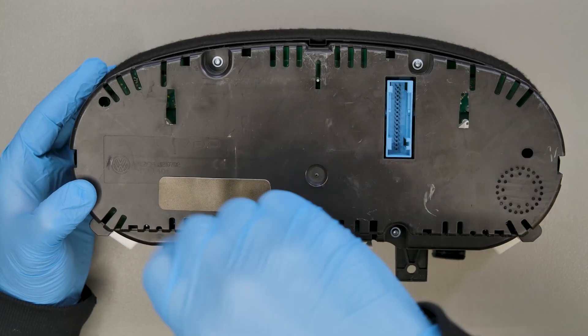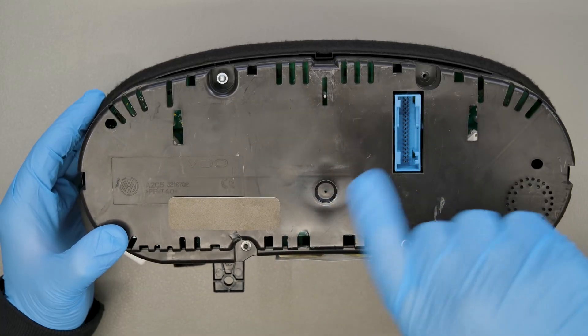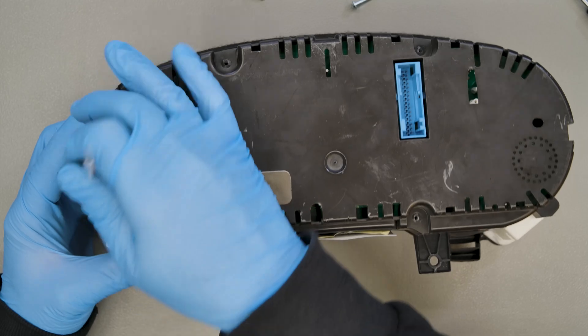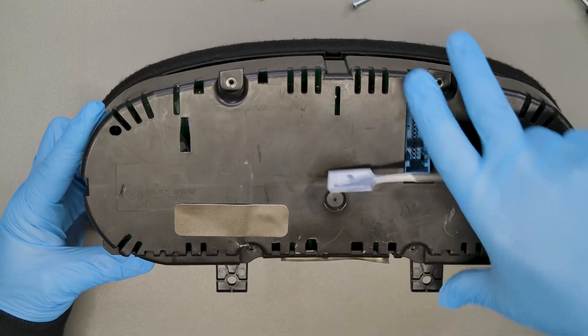Position the dashboard as shown and undo the metal screws. Remove the plastic backing and then the front cover.